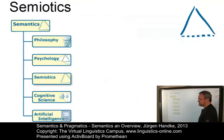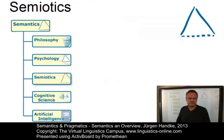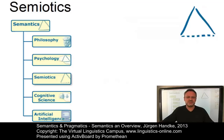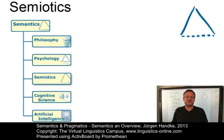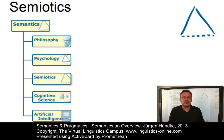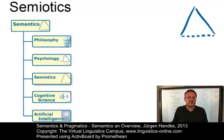In semiotics, the study of signs, language is viewed as one symbolic system among many. Linguistic meaning is regarded as a special subset of the more general human capacity to make one thing stand for another — that is, to identify and create signs.